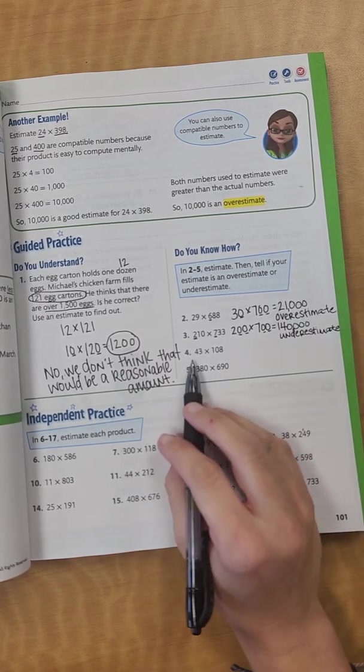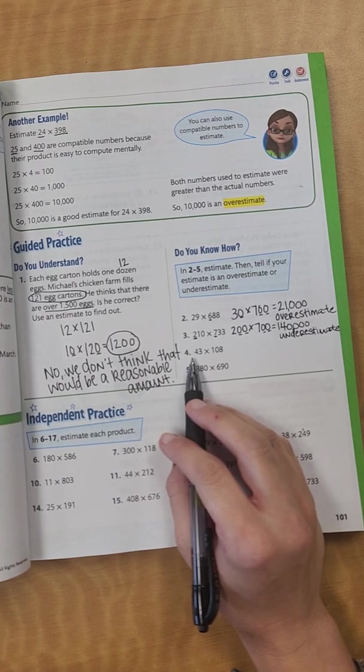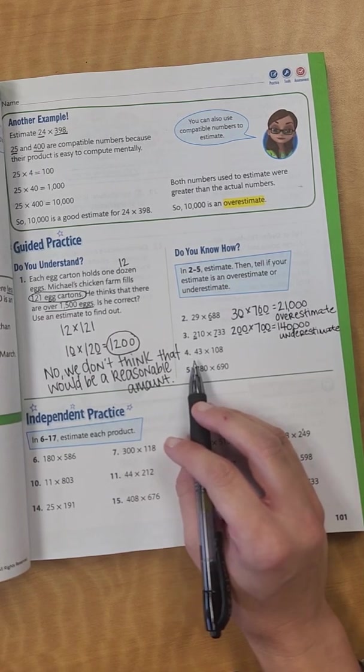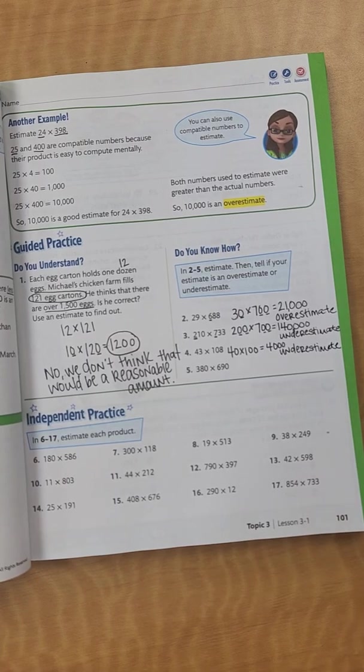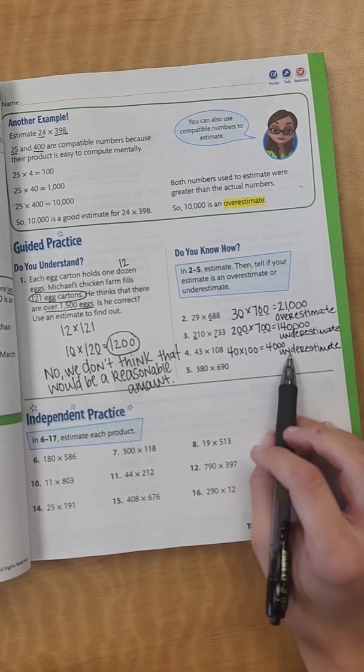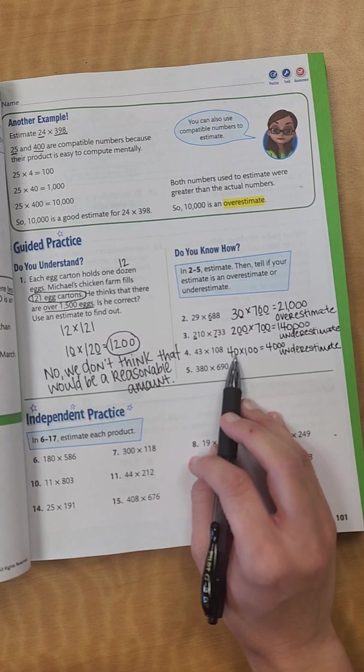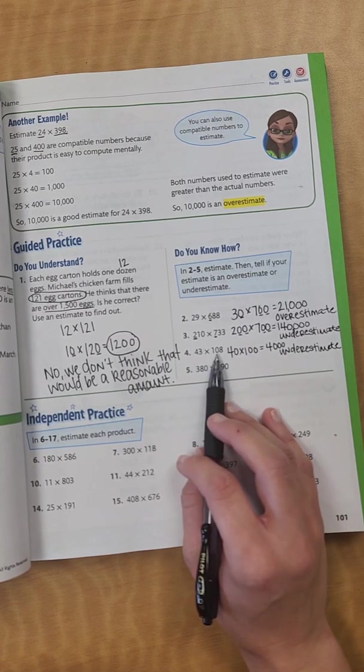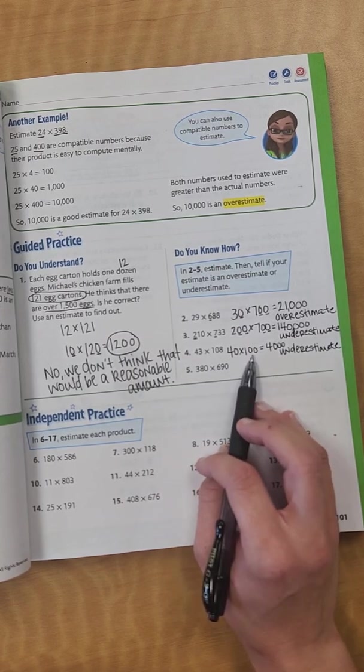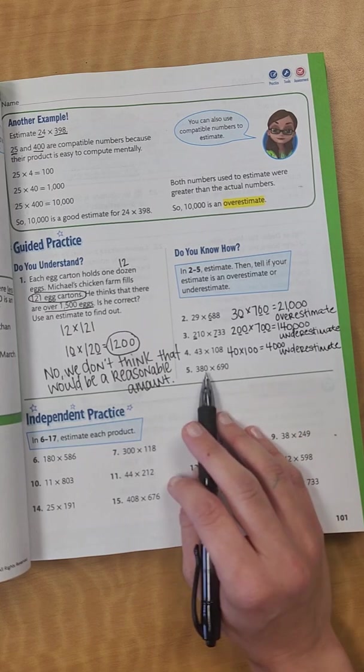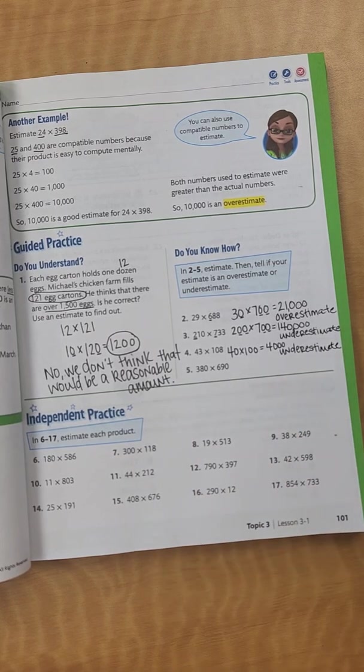All right, now I want you to try number 4 on your own. I want you to pause the video, and then when you unpause it, check your work. Did you get 4,000? If you did, that's what I got. And I also realized that that's an underestimate because my 43 went down to 40, and my 108 went down to 100.